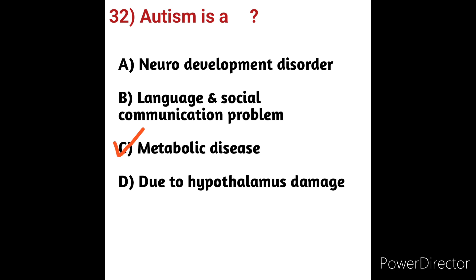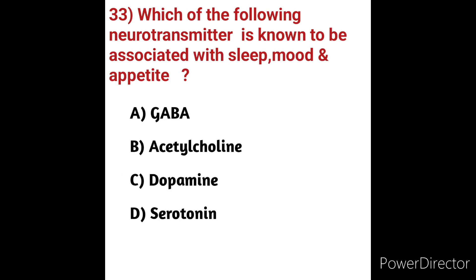Question 33: Which neurotransmitter is known to be associated with sleep, mood, and appetite? Options: (A) GABA — gamma-aminobutyric acid, the primary inhibitory neurotransmitter in the brain; (B) acetylcholine, which regulates cardiac contraction and blood pressure; (C) dopamine, responsible for pleasure, satisfaction, and motivation; (D) serotonin.